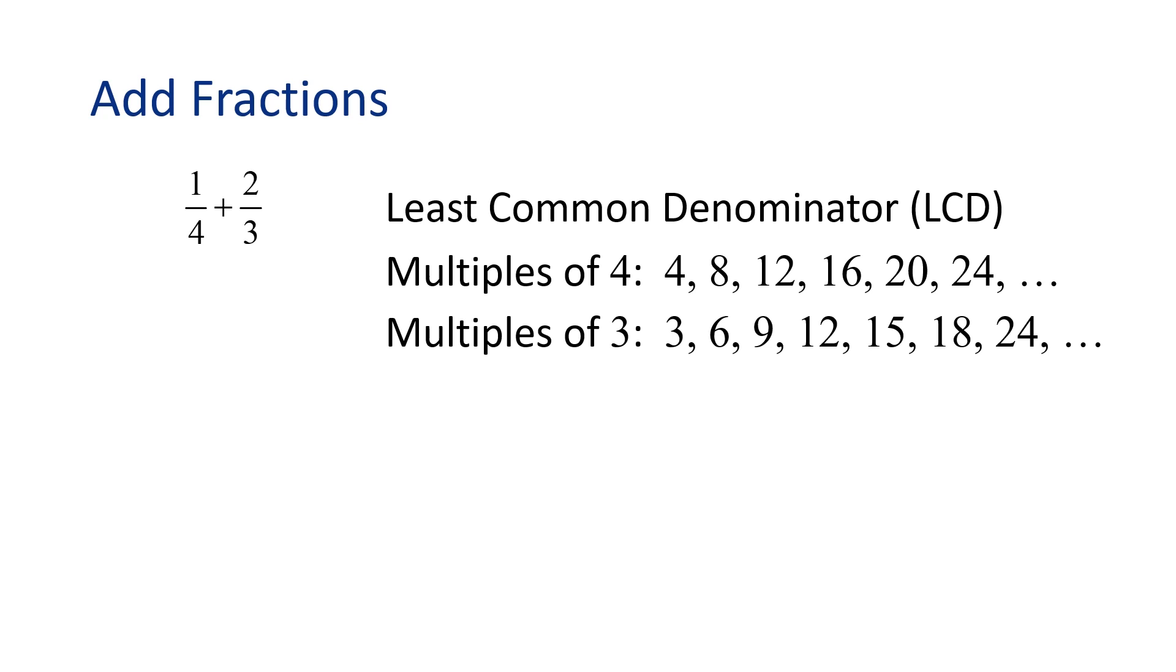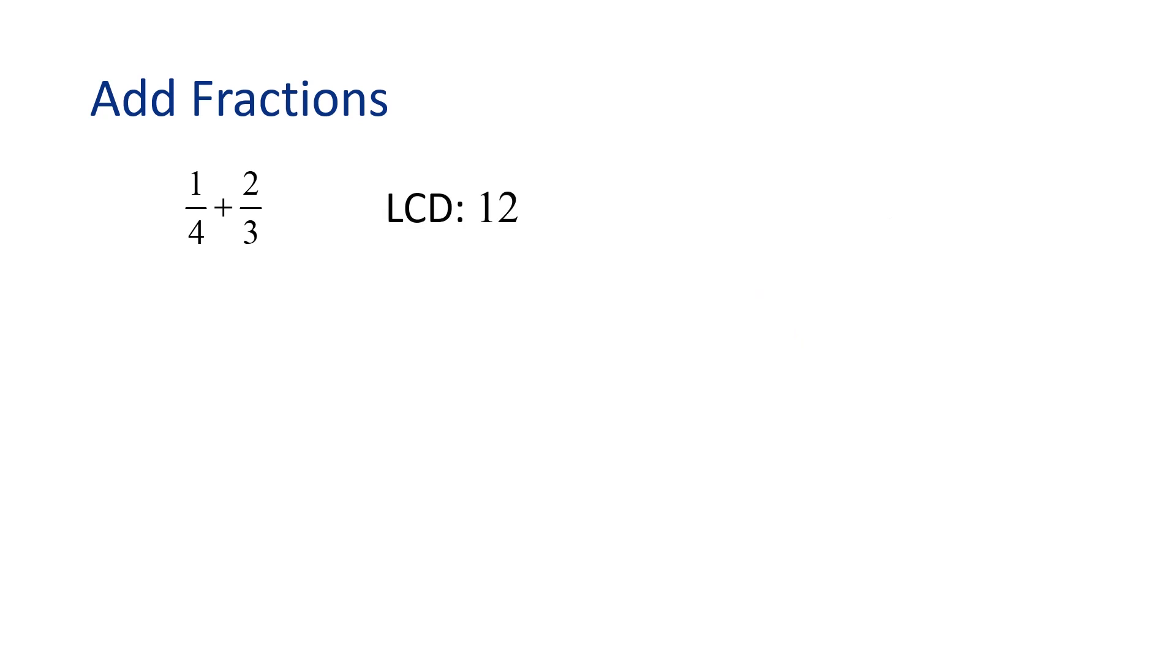Are there any multiples in common in both lists? Yes! We can see there are two common multiples, 12 and 24. Although we found two common multiples, we want to use the least common multiple, which is 12. Okay, this means our LCD is 12, meaning we want to rewrite both fractions, 1 fourth and 2 thirds, as equivalent fractions with a denominator of 12.